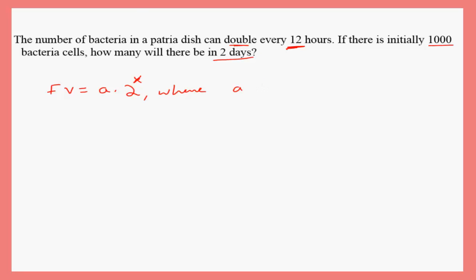Where a is the initial value, let me just write this one down here so we can review. The doubling value is the initial value where x is the number of doubling times, the number of doublings.